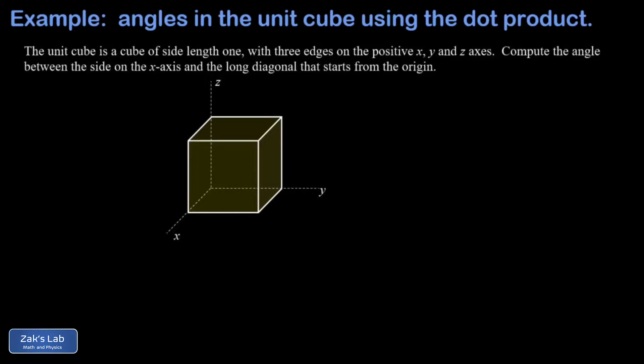What we're after here is the angle between the side on the x-axis and the long diagonal that starts from the origin. By the long diagonal, I mean the one that connects two corners on opposite sides of the cube, as opposed to the short diagonals contained within the faces. That's the angle we're trying to get.